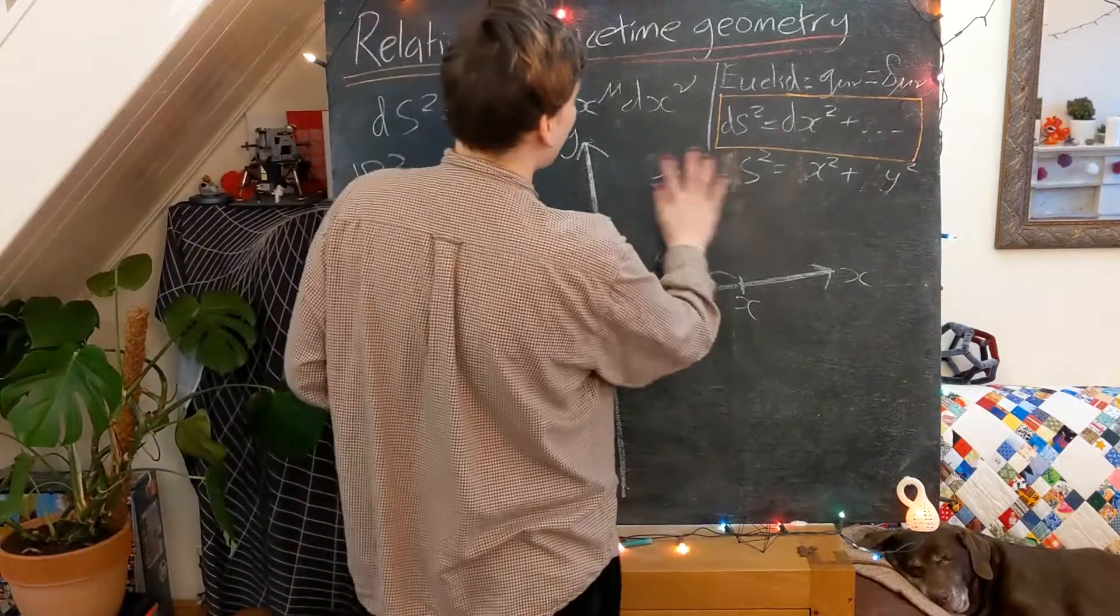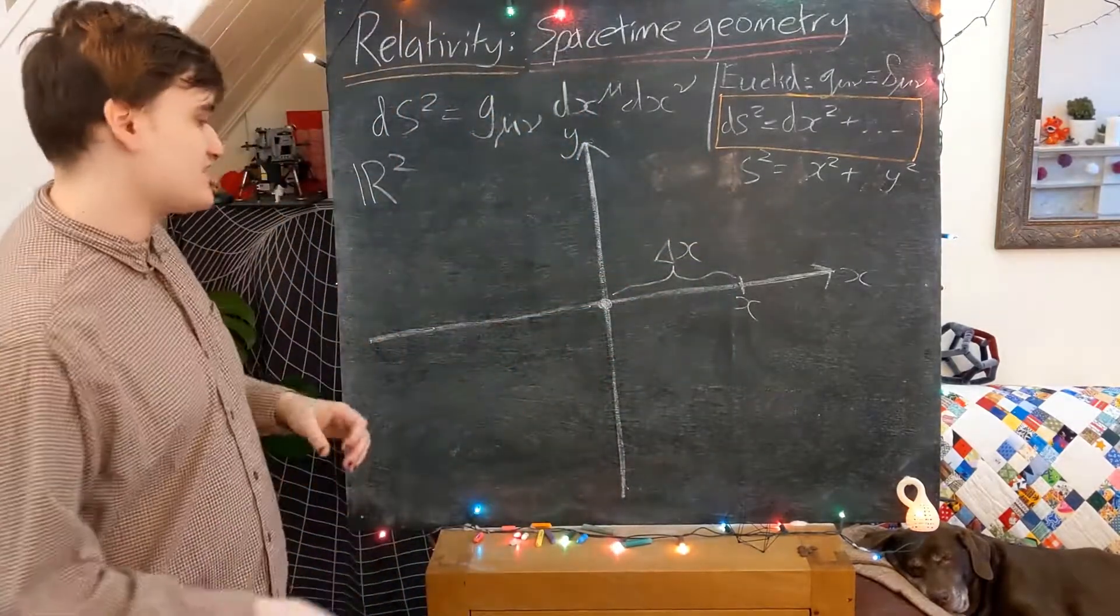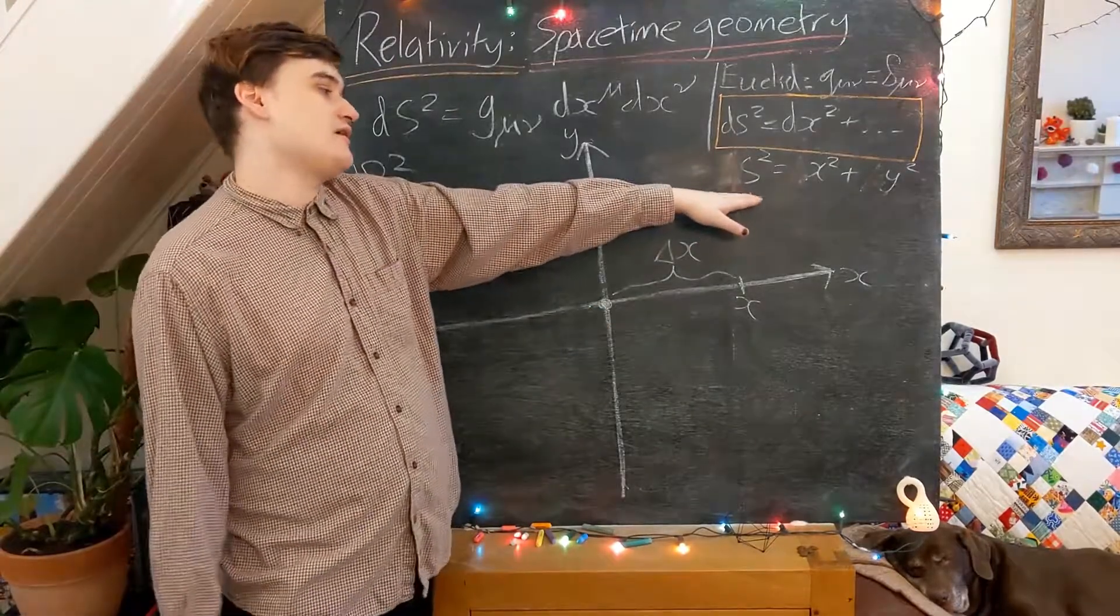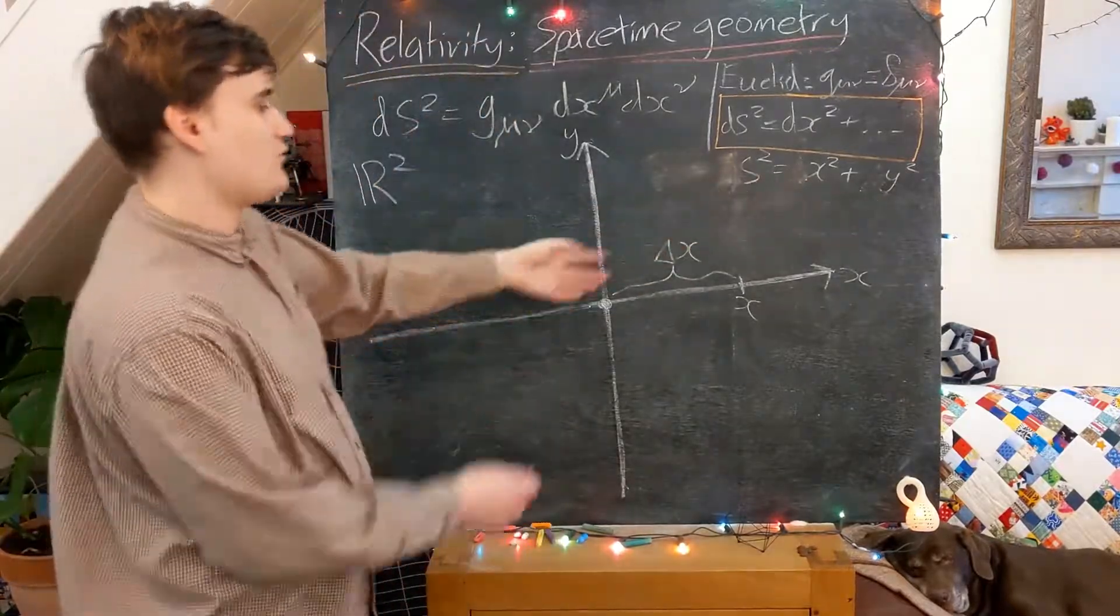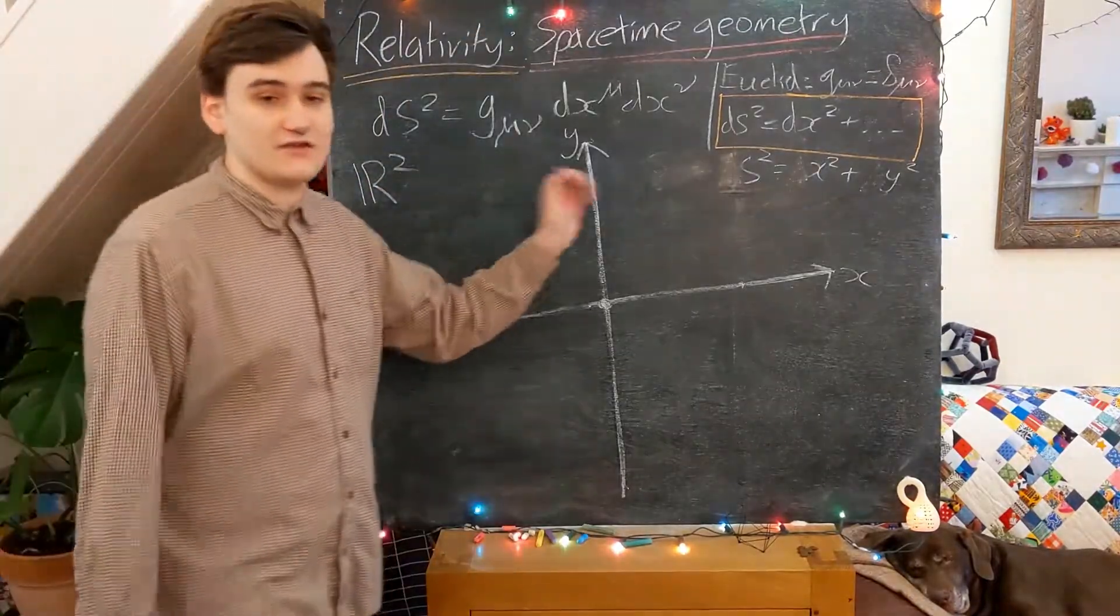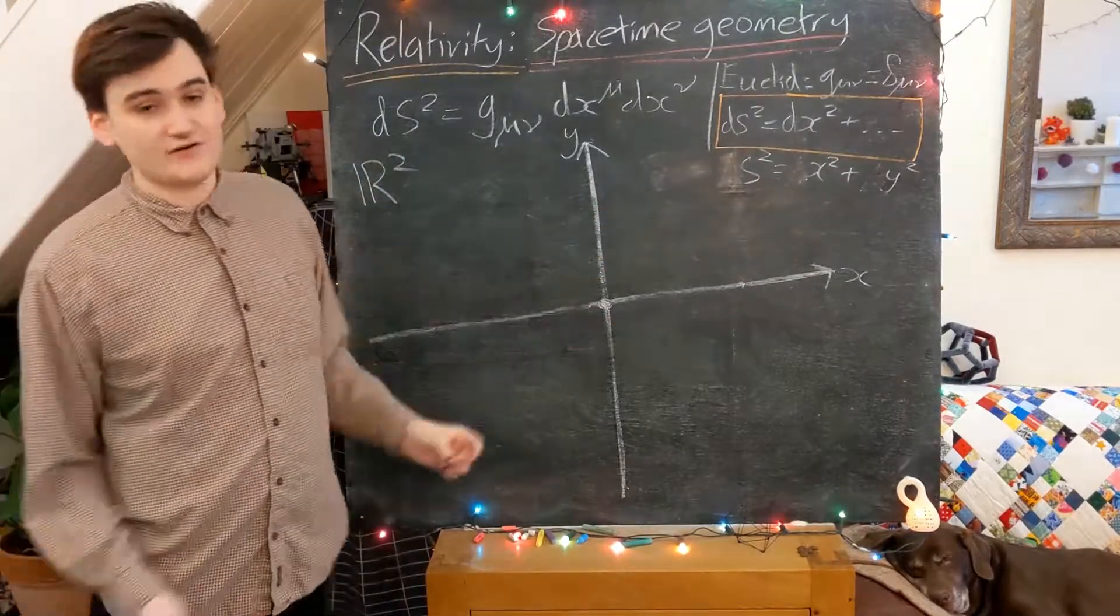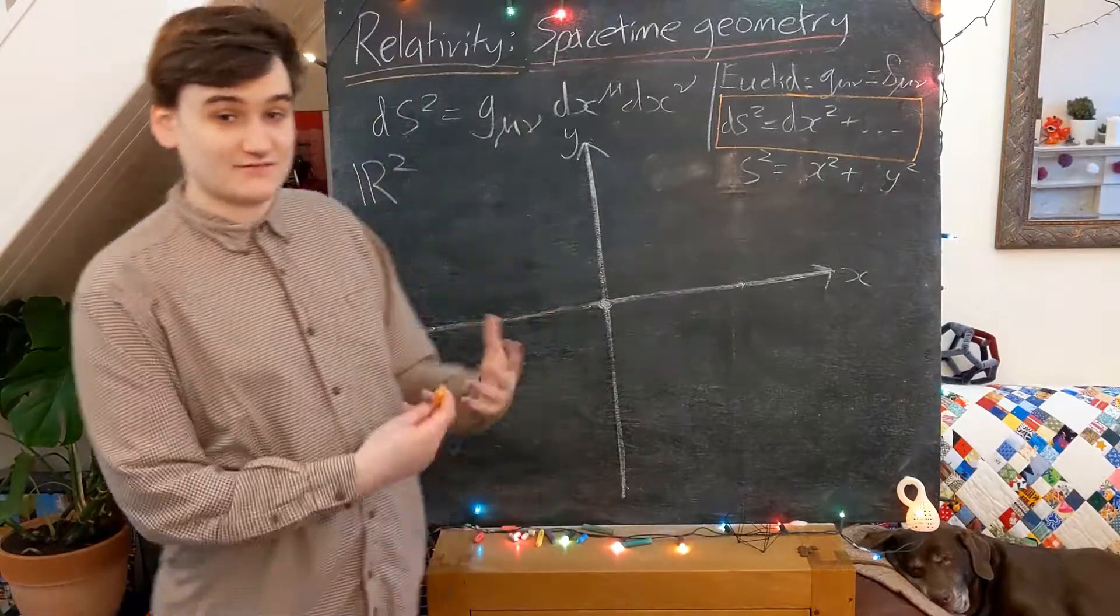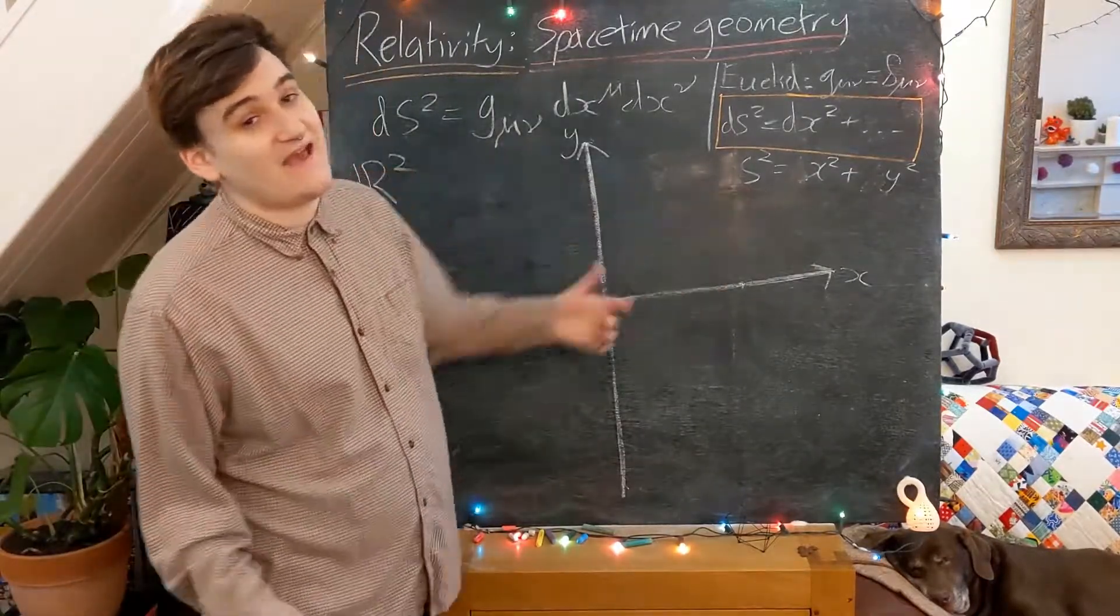So now this s squared, this is representing effectively the distance from the origin of our coordinate system, and now we can now just look at essentially the level curves of this function where this distance is going to be constant. In the Euclidean geometry the curves of constant distance from the origin are fairly simple, we can just see here x squared plus y squared, this is just defining a circle in this plane of some radius s.